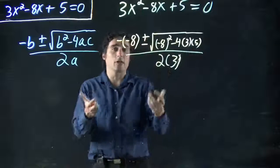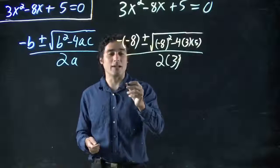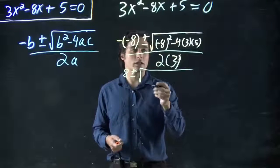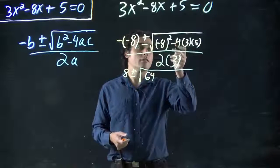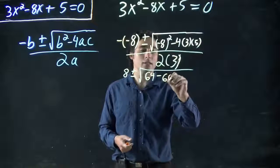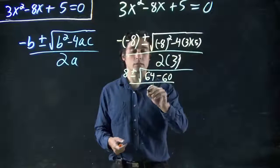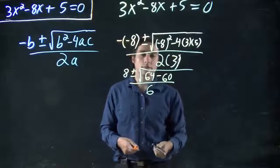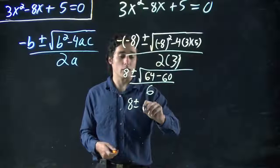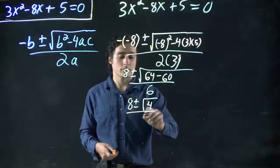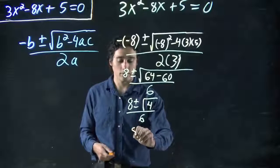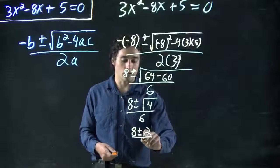Great. Now we evaluate. So what's minus 8 times minus 8? 8 plus or minus square root of minus 8 squared, which is 64. 4 times 3 times 5, or 12 times 5, which is 60. Minus 60. All over 6, or 2 times 3. Great. 64 minus 60. We got 8 plus or minus square root of 4. All over 6. Square root of 4 is 2. 8 plus or minus 2 all over 6.